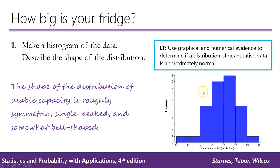Looking at the shape, we can see that the shape of the distribution of usable capacity is roughly symmetric, single-peaked, and somewhat bell-shaped.